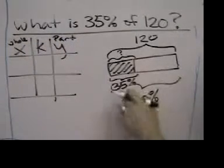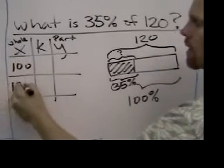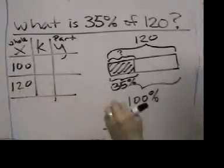Well in this case, the whole is 100% and 120. So 100% and 120 go underneath the whole.